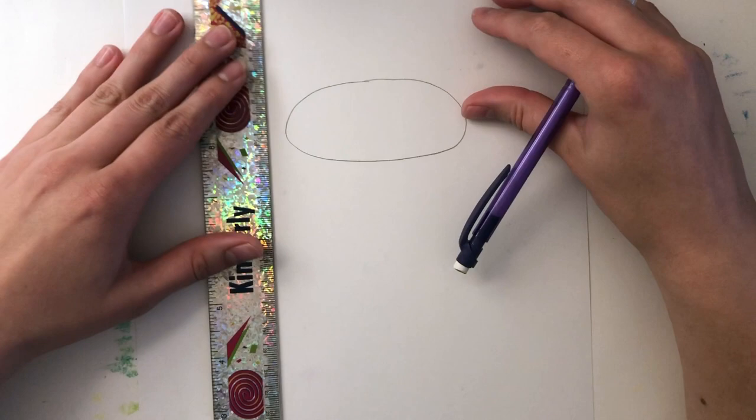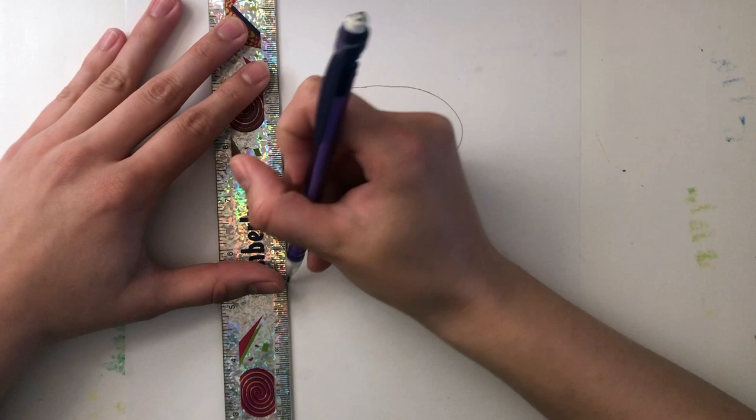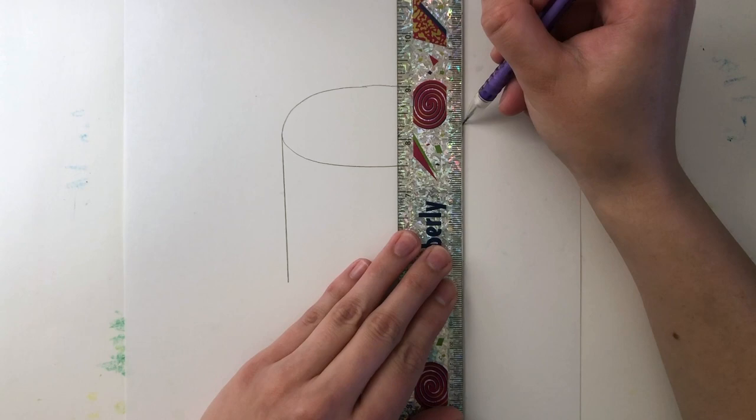Next you are going to draw in two vertical lines on the sides of your oval. This will determine the height of your cake. You can make your cake as tall or as short as you'd like.